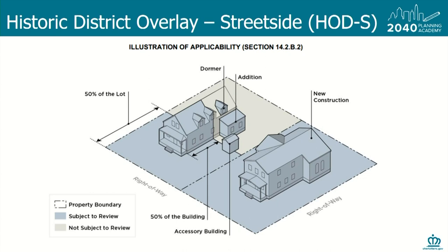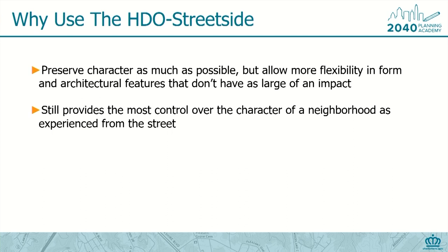Anything in the backyard — if you're not on a corner lot — that meets zoning is fine: sheds, swimming pools, accessory buildings, patios, fire pits — none of that would require review. You would use street side when you want to preserve the character of an area but allow more flexibility in backyards that don't have large impact. It still provides the most control over the character of the neighborhood as experienced from the street. The Historic District and street side are elective tools that give neighborhoods a voice in their future — the strongest tool available, with citizens participating fully in the designation process, which is completely neighborhood-led.